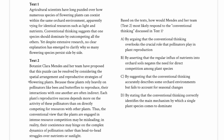Let's look at one more. In this one we have a slightly modified prompt: 'How would Mendez and her team' — not the author of text two, but some people mentioned in text two — 'respond to' not the overall argument in text one but 'the conventional thinking discussed in text one.' That means our first step is to really zero in on what the conventional thinking is before we get into text two.